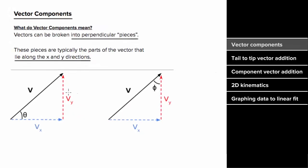In other words, to find the vertical component of this total vector knowing this angle, since this vertical component is opposite to this angle, we could write the vertical component as the magnitude of the total vector times sine of that angle. And since this horizontal component is adjacent to that angle, we could write the horizontal component as the magnitude of the total vector times cosine of that angle.